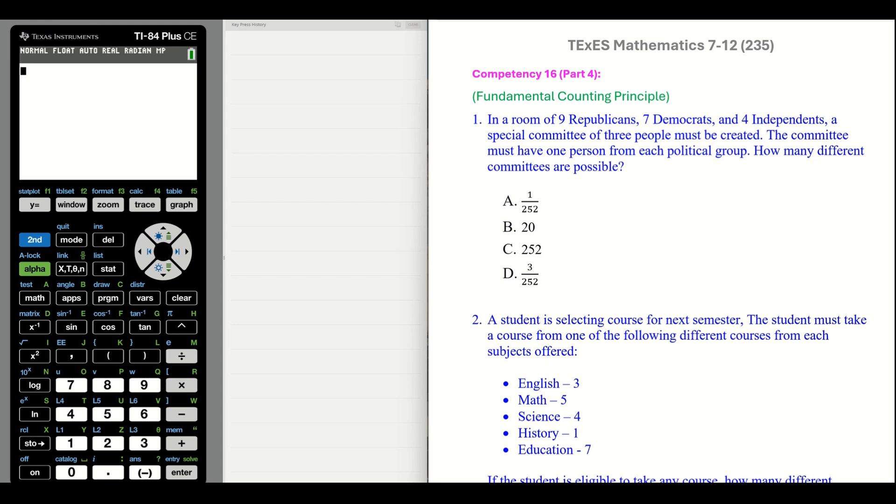In this situation, it does not ask you for probability. It's just asking you for how many possibilities. So you simply need to multiply seven, nine, and four together. That's going to give us 252 possible committees.